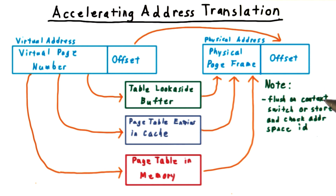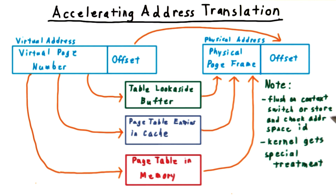Alternatively, the TLB can use an address space identifier field in the table to make sure that the translation is meant for use in the current context. I should point out too that the kernel sometimes gets special treatment in the TLB. Because the kernel addresses are constant across processes, there's no need to flush them from the TLB on a context switch. Sometimes too, part of the TLB is reserved for kernel addresses.